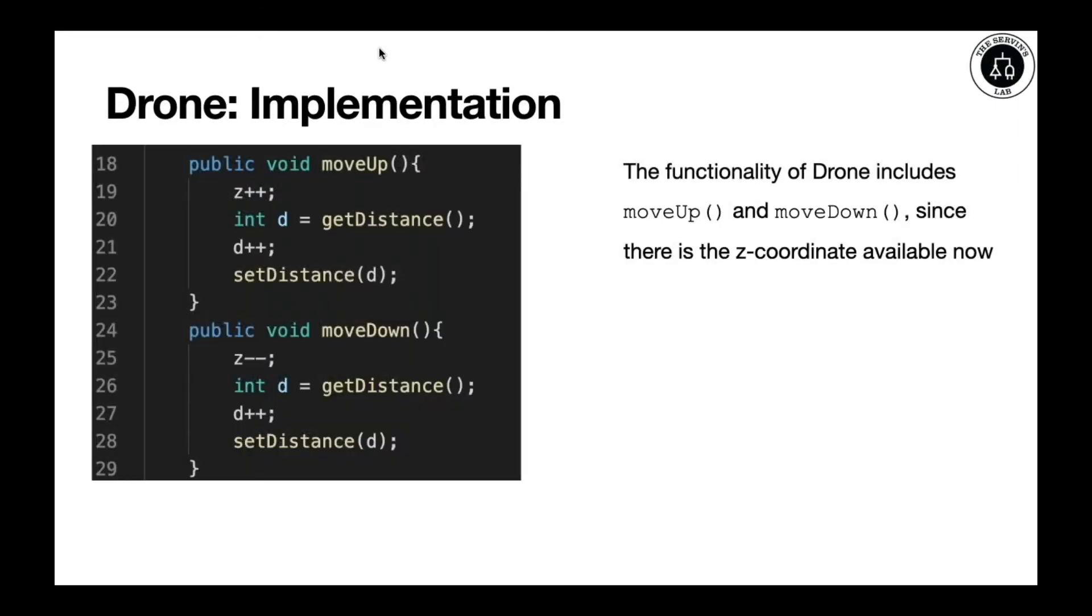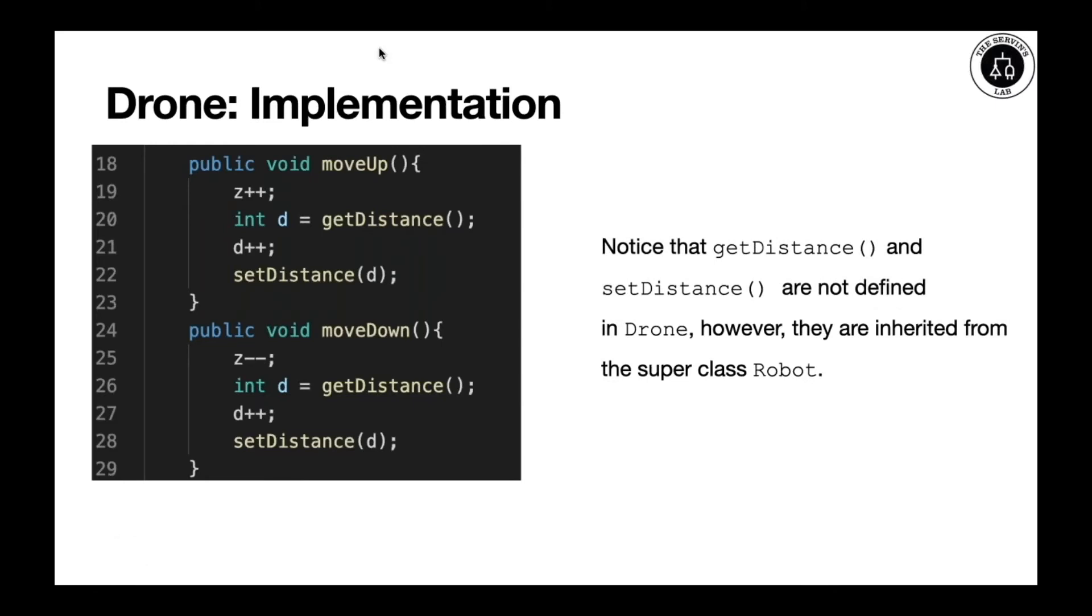We probably need more methods or functionalities. We're going to have moveUp and moveDown, which means that we need to navigate through the Z coordinate, the altitude. So moveUp basically increases the coordinate Z, where moveDown will decrease as it shows in line 19 and line 25. We also need to update our distance. We will use a temporary variable called d in order to set the distance. Once we obtain it, we can increase it in both methods and then set it by using the setter, setDistance.